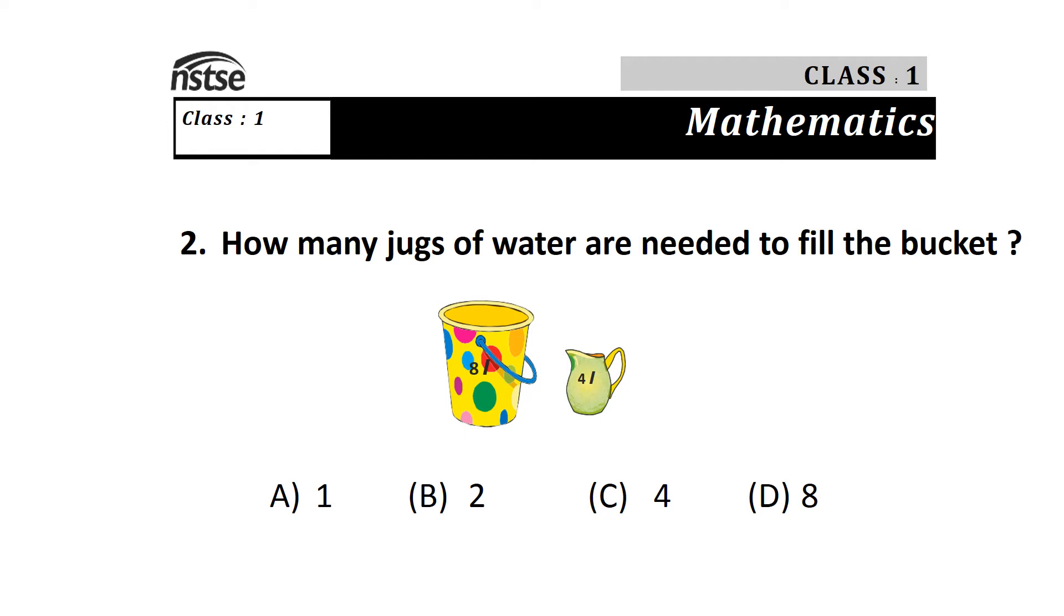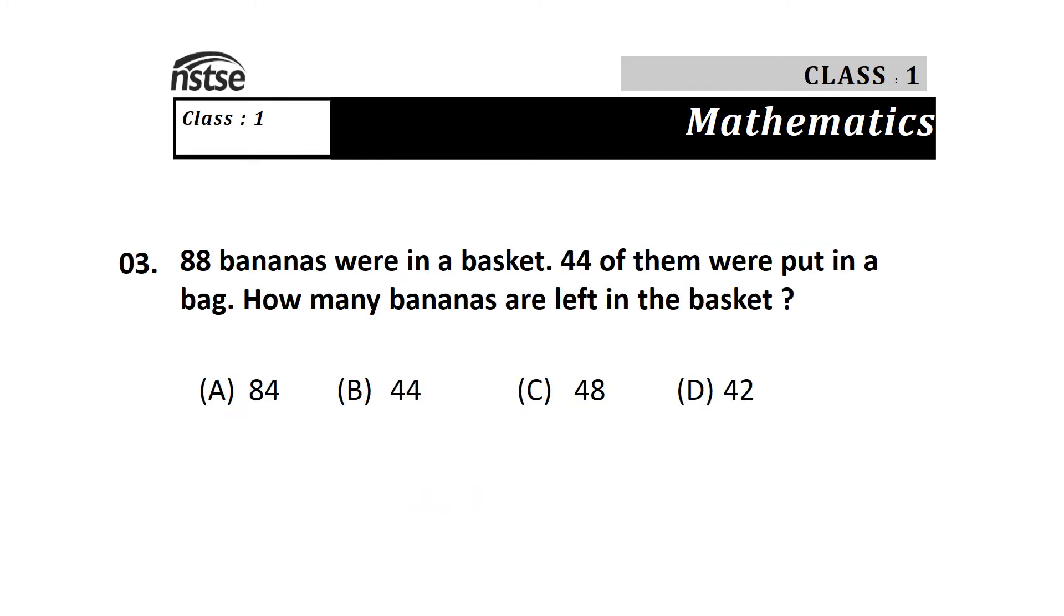Question 3: 88 bananas were in a basket, 44 of them were put in a bag. How many bananas are left in the basket? Options are A) 84, B) 44, C) 48, and D) 42. Here left is given, which is the keyword for minus, so we do 88 minus 44, which equals 44. The answer is B) 44 bananas left.